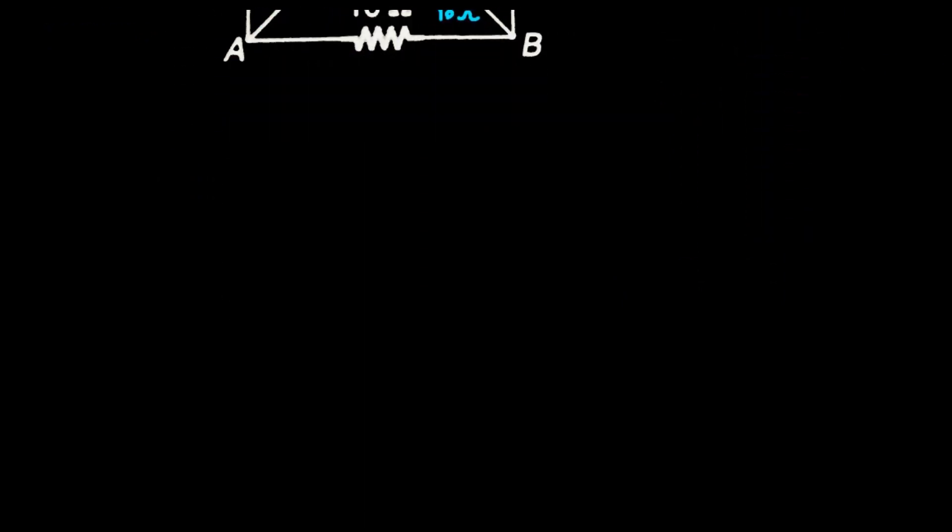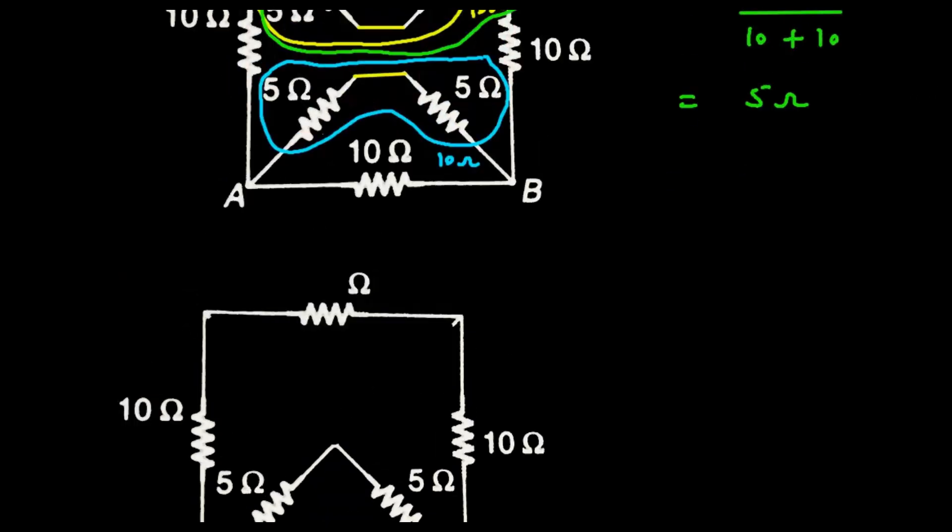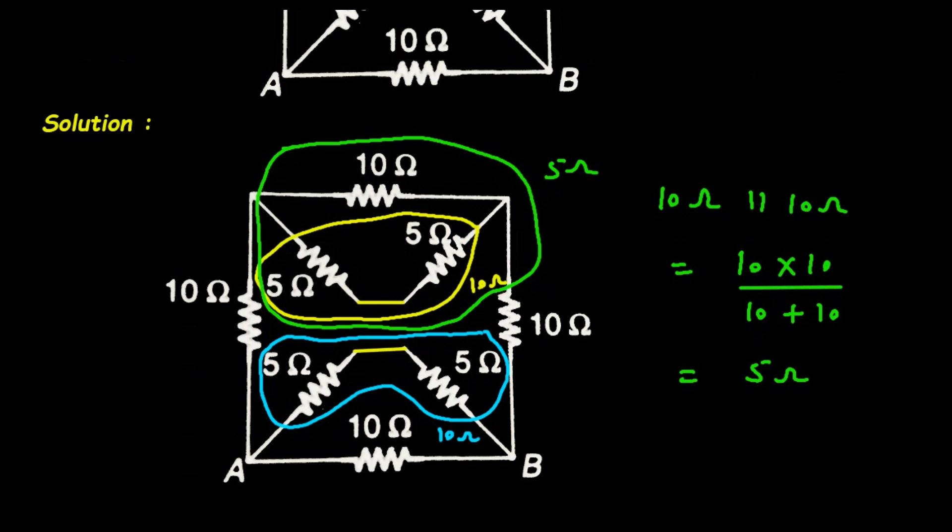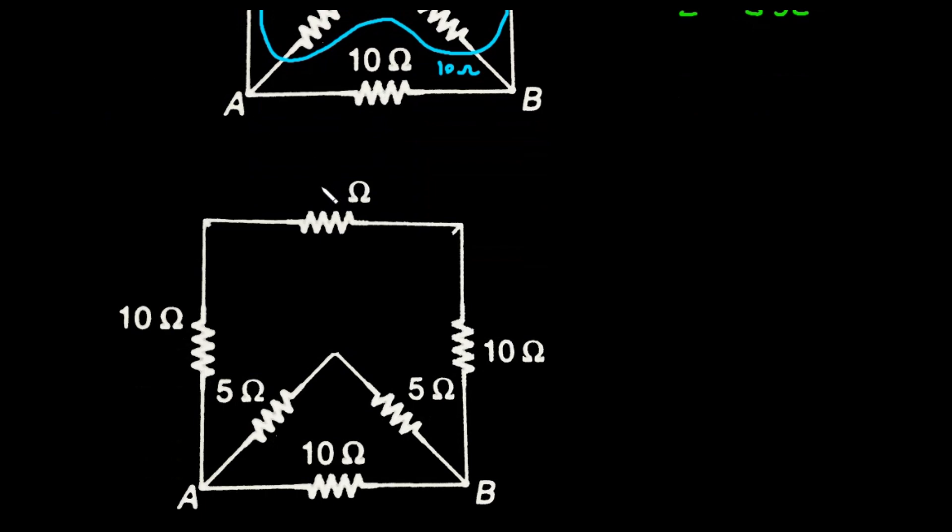So here we can replace this resistance. Now here it will be, it will be basically 5 ohm we can write. So it will be simply 5 ohm.